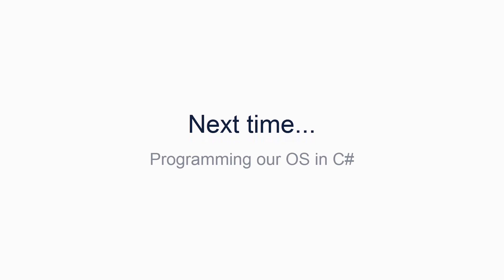Next time we will be looking at how to do the equivalent main method but using C# and the Fling OS drivers compiler. This will require you to be running on Windows. If you are not running on Windows, please skip the next tutorial and go on to tutorial 7. Tutorial 7 will look at memory and virtual memory, and also explain how to make our kernel a higher half kernel.